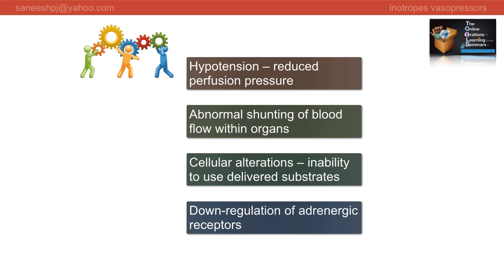The basic concepts described so far help in appropriate selection of vasoactive agents in various pathophysiologic changes. When there is hypotension, perfusion pressure gets compromised. Tissue hyperperfusion may also result from abnormal shunting of blood flow within organs. Cellular alterations resulting in an inability to use delivered substrate appropriately may also occur. Additionally, down-regulation or desensitization of adrenergic receptors is another concern while dealing with a shock scenario - you look to your drugs to produce desired effects when the targeted receptors may be rendered ineffective or down-regulated.